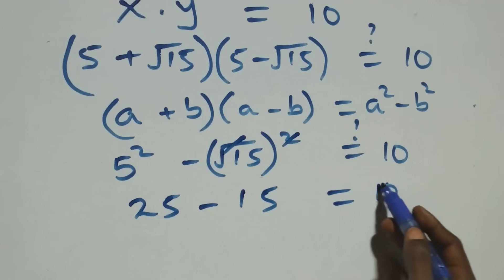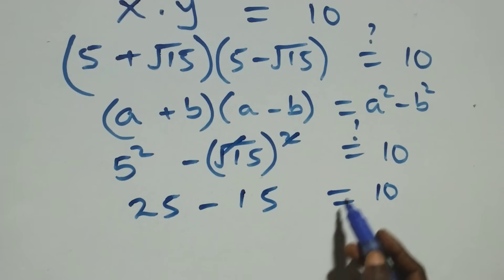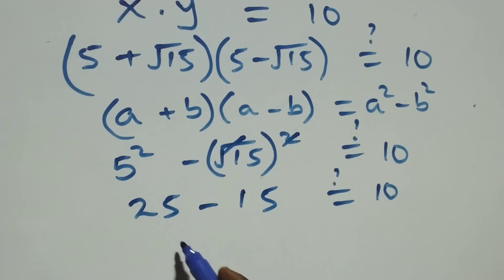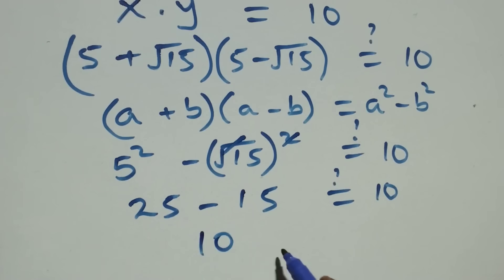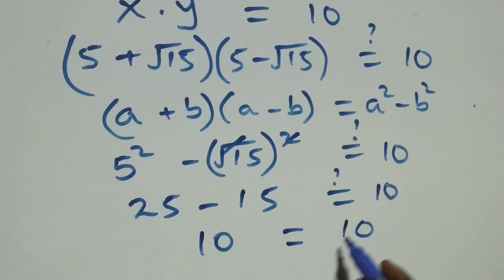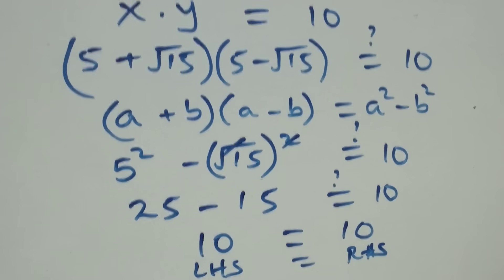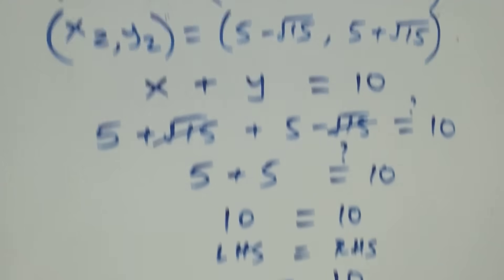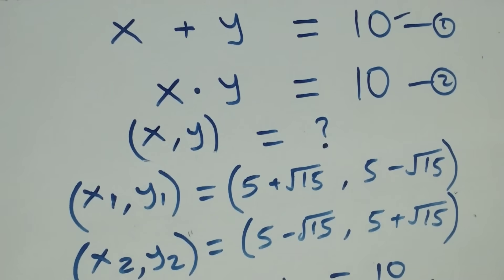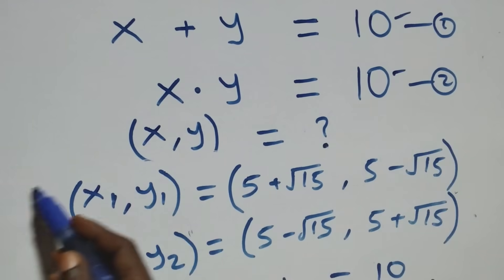Twenty-five minus fifteen equals ten — left hand side equals right hand side. Therefore, we conclude that both sets of solutions satisfy the given equations.